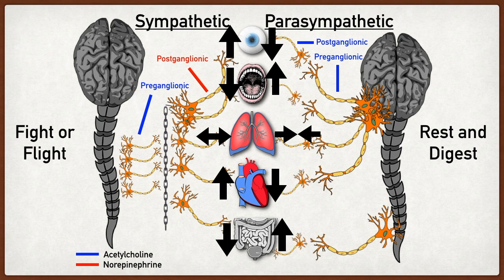The autonomic nervous system is responsible for these involuntary responses and movements. It is a branch of the peripheral nervous system involved in involuntary responses including movements of smooth muscle and cardiac muscle. This is in contrast to the somatic nervous system, which is a different branch of the peripheral nervous system involved in generating voluntary muscle movements using skeletal muscle.